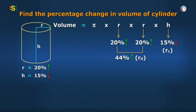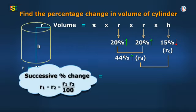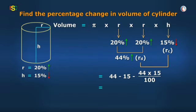Now, club R D and R C to get the final percentage change in volume, which is equal to 44 minus 15 minus 44 into 15 divided by 100, which is equal to 29 minus 6.6, that is 22.4%. And yes, Vidya, it is positive, showing that there has been an overall increase in volume by 22.4%.